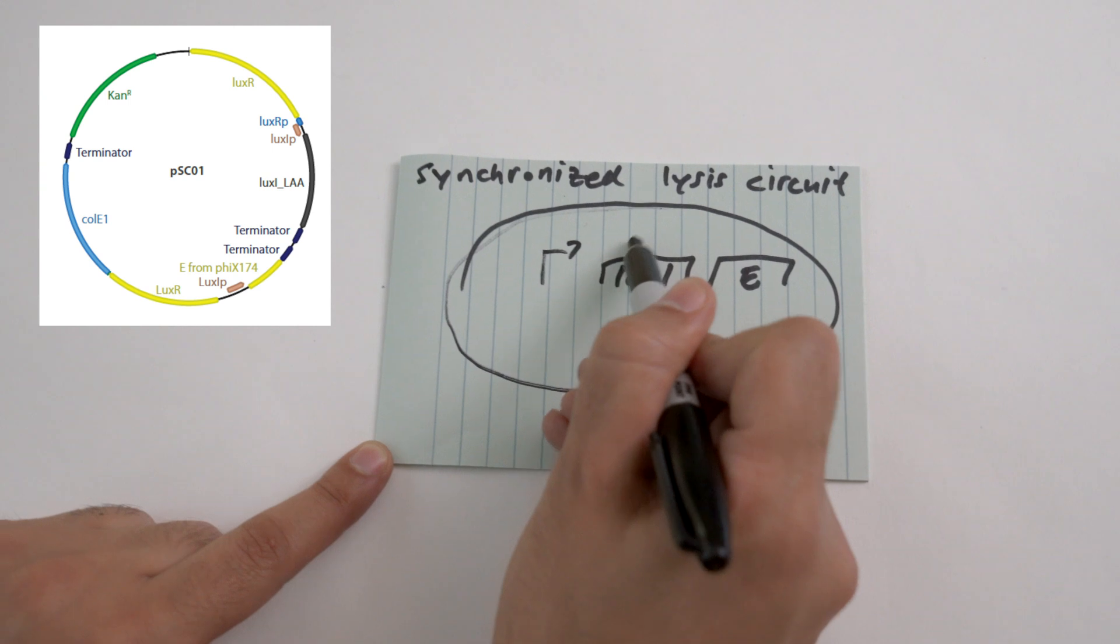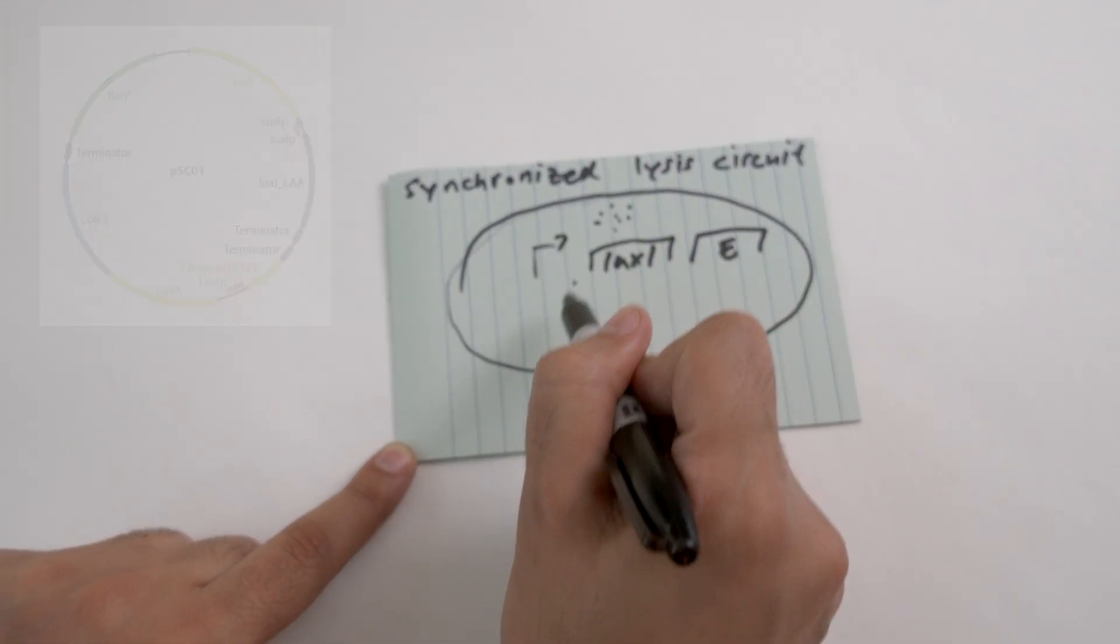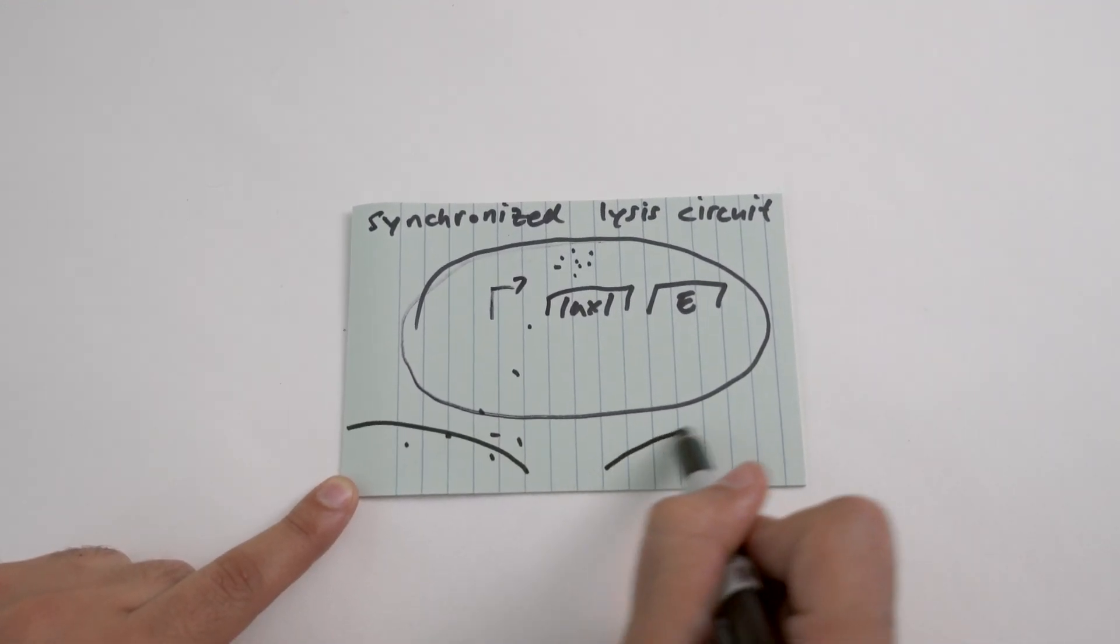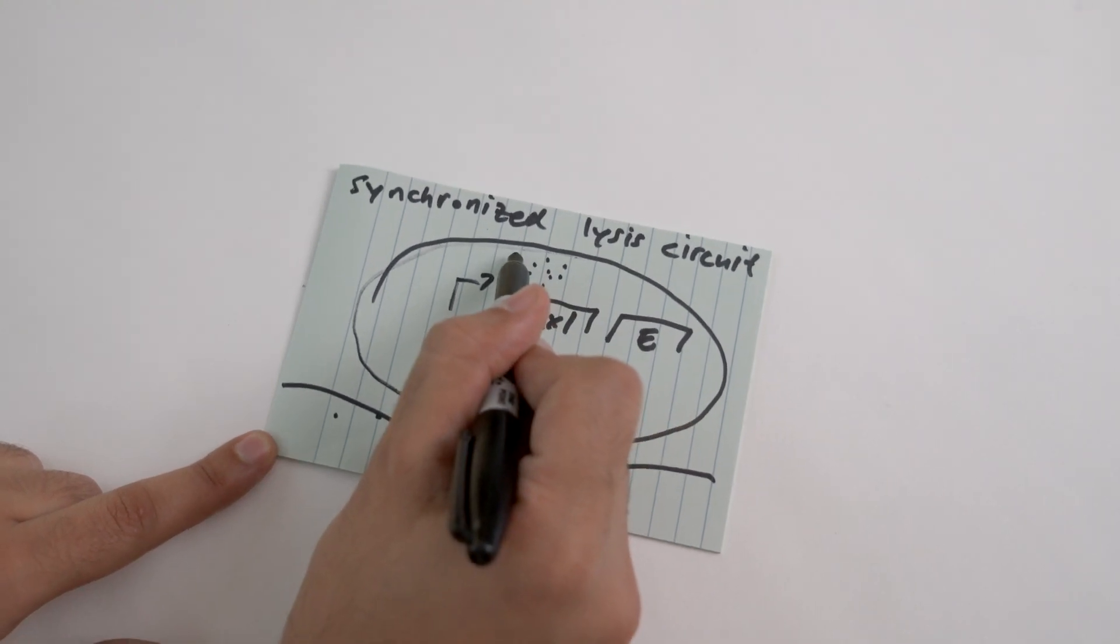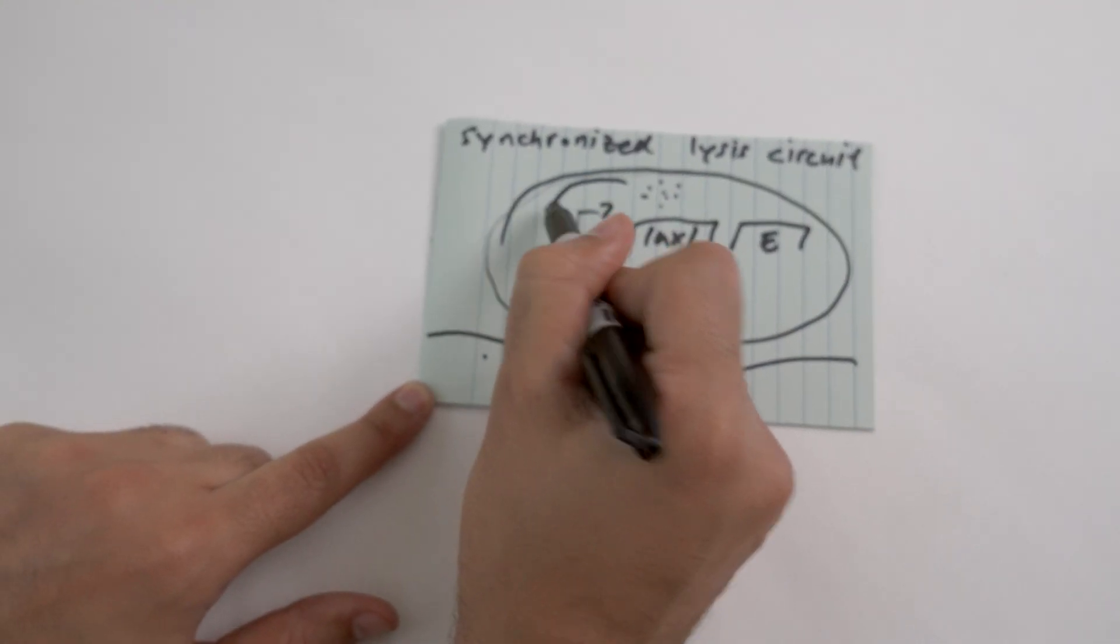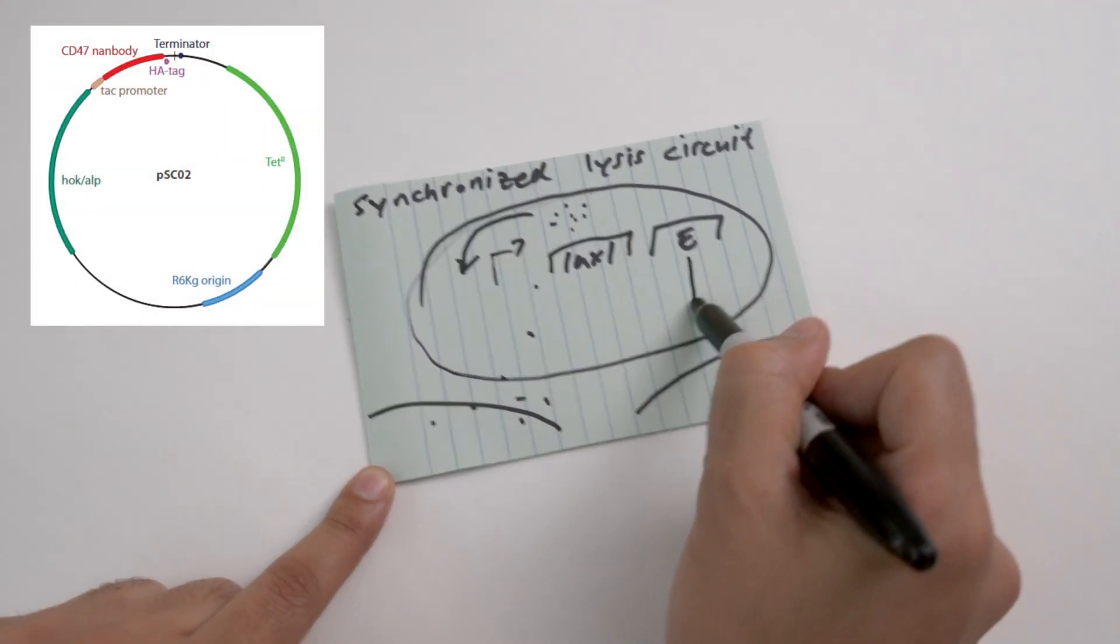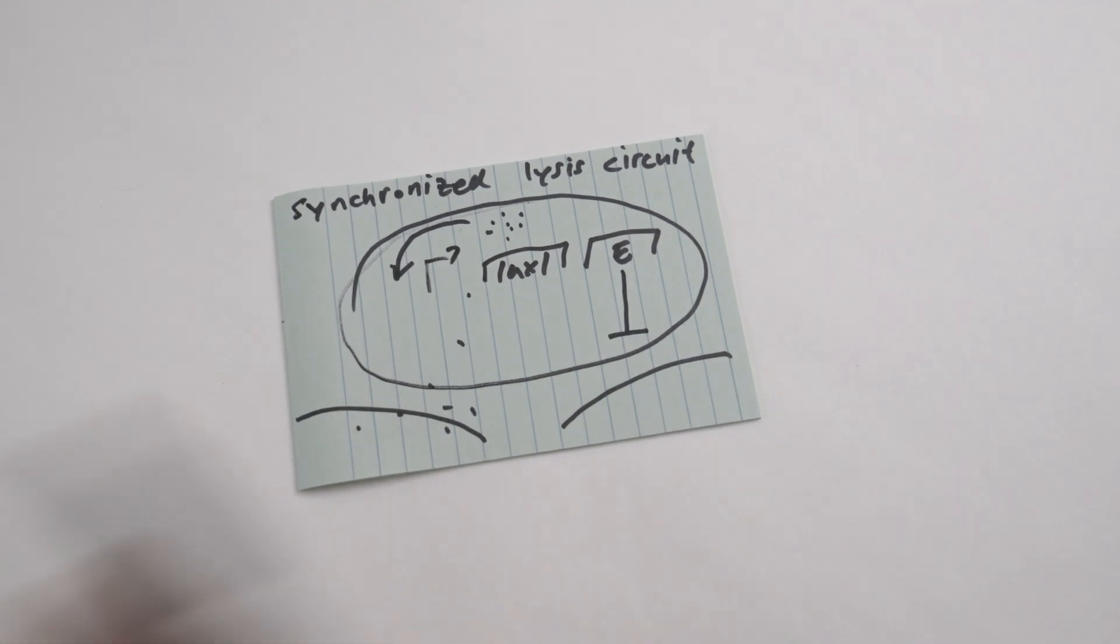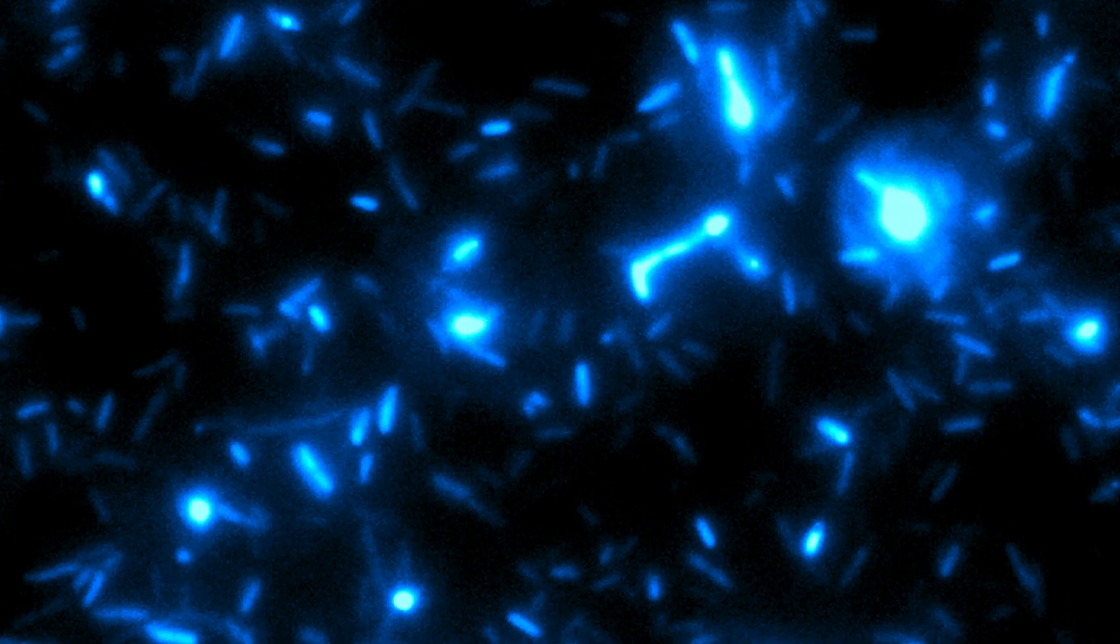One gene has an enzyme that makes small molecules in the bacteria, and these molecules can travel outside and communicate with other nearby bacteria. When other bacteria sense this molecule, it activates the system, and this E gene will kill these bacteria and allow them to self-destruct. The point of that self-destruction is that they can release the therapy into the surrounding environment.